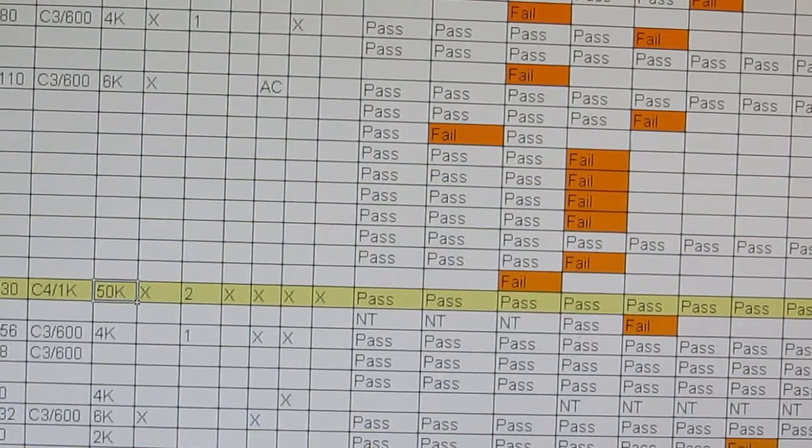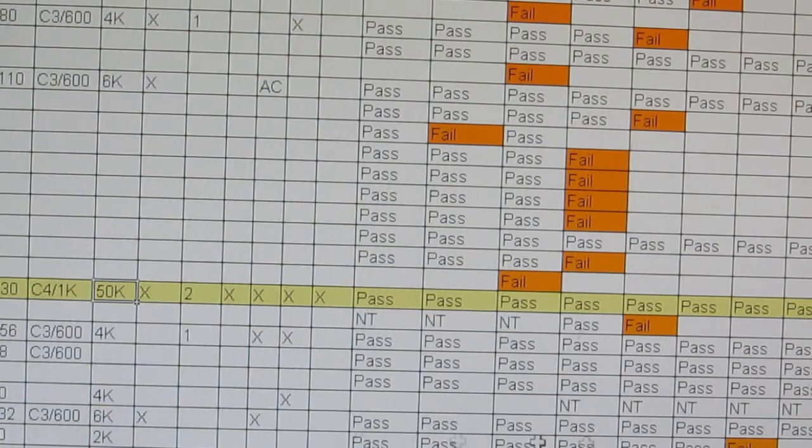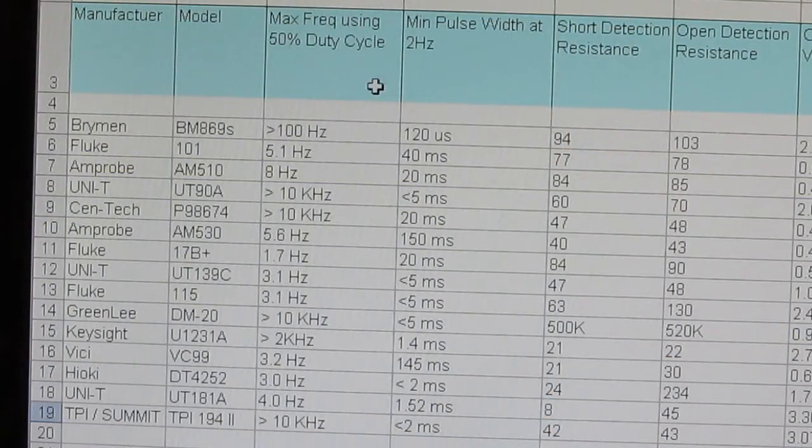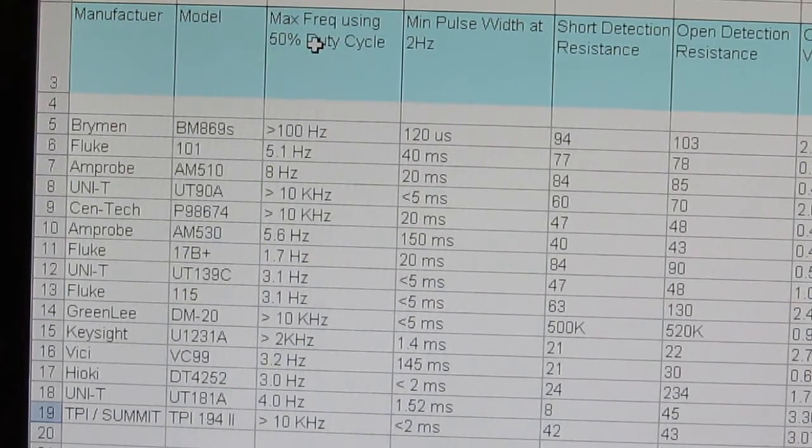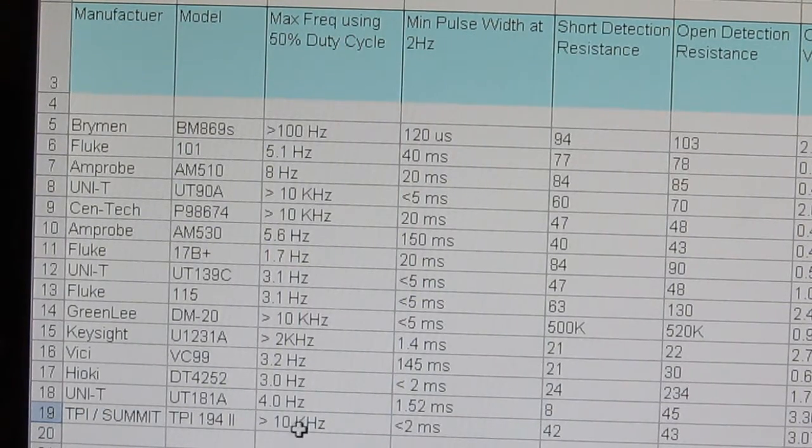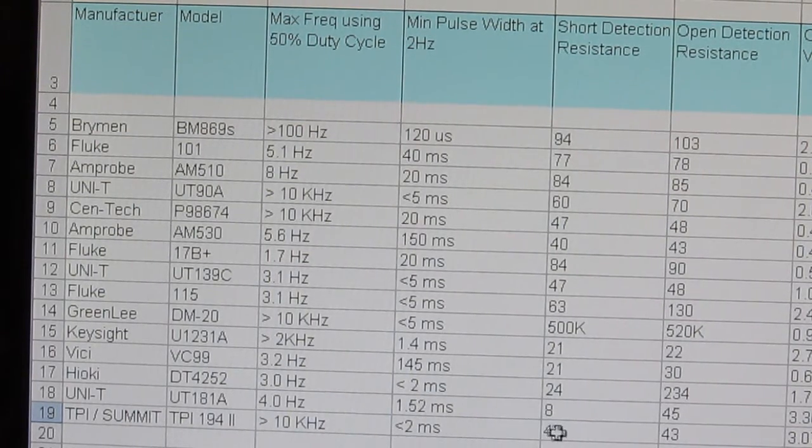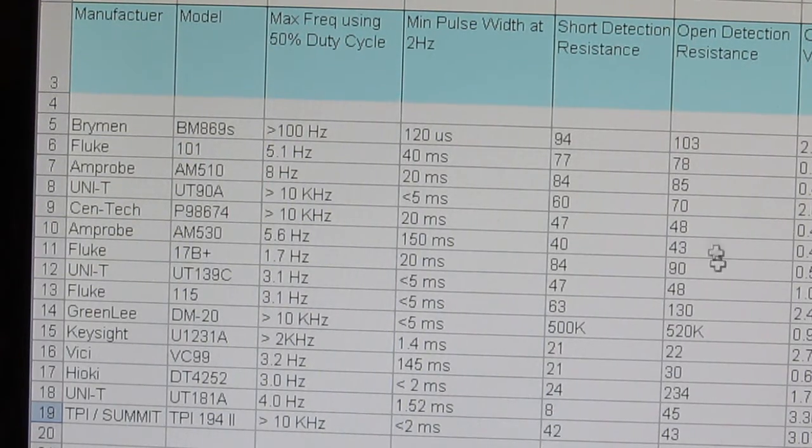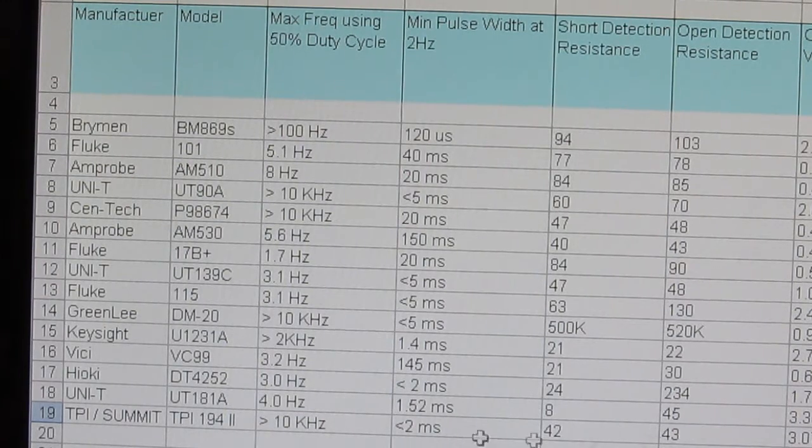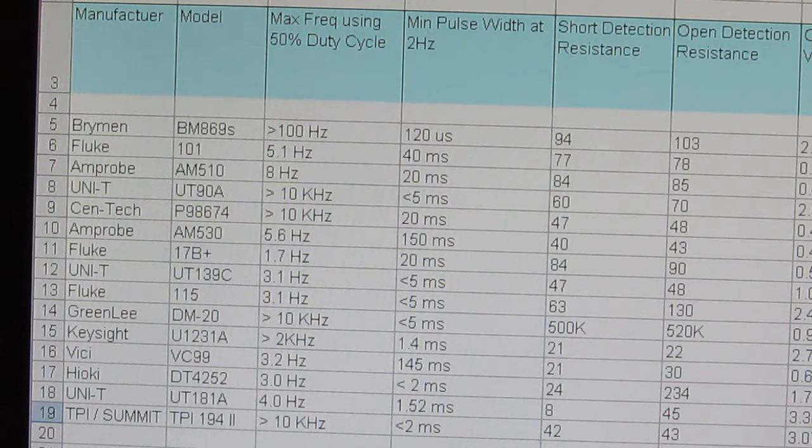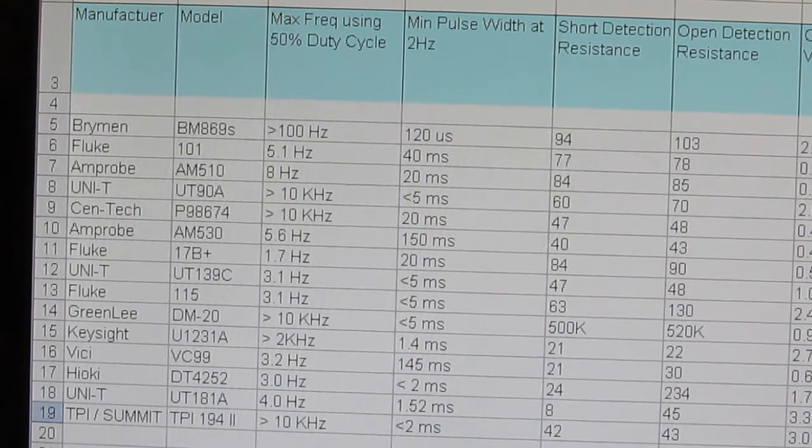I suspect the Summit would have also failed the ESD testing. And again, meters that have failed that are the UT181A, the Vichy VC99, the XTEC EX530, and the Unity 61D and E both failed that test. Looking at the continuity test results for the TPI, using a 50% duty cycle, the maximum frequency is somewhere over 10 kilohertz. The detectable pulse width is somewhere less than 2 milliseconds. Again, plenty fast. The resistance that it detects the short at is 42 ohms, and the open circuit is roughly 43 ohms. So again, basically no hysteresis. It's a non-latching type. Open circuit voltage is roughly 3 volts, and the short circuit current is almost a milliamp.